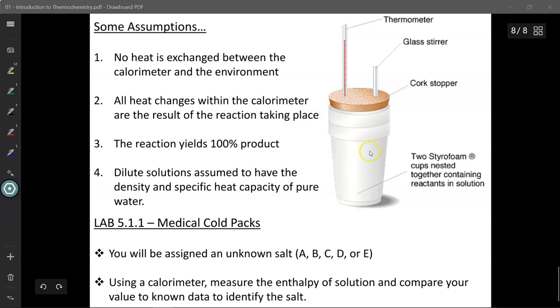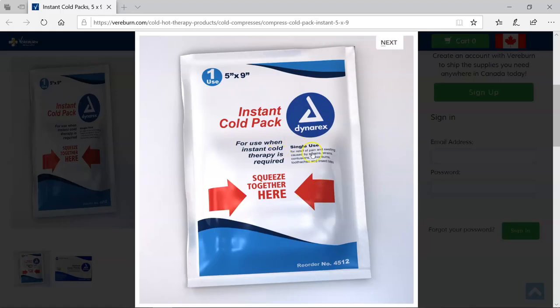You would then take your kilojoules of energy, divide it by the mass of the salt you have, and then measure it in kilojoules per gram, and look it up in the table to compare to find out which salt is the most likely identity for each of these five unknown powders. This is how medical cold packs work.